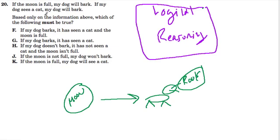The other way the dog will bark is if the dog sees a cat, so here's our little cat. If the dog sees a cat, then the dog will bark.